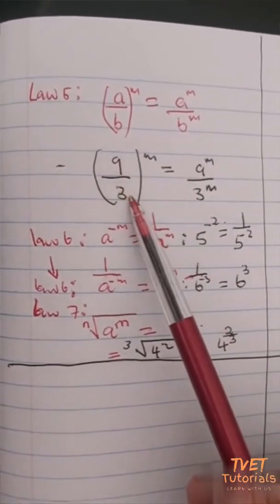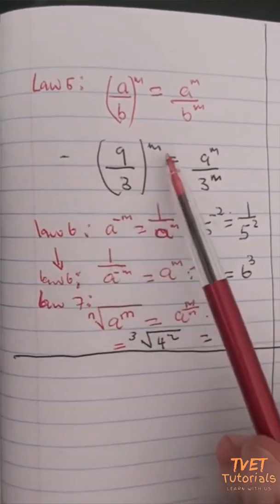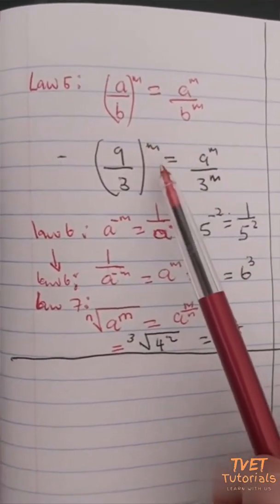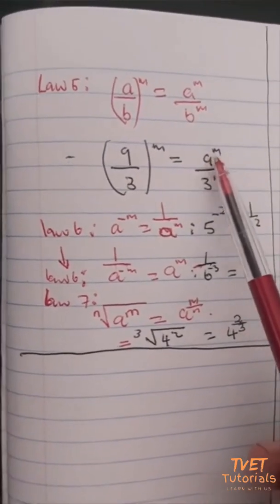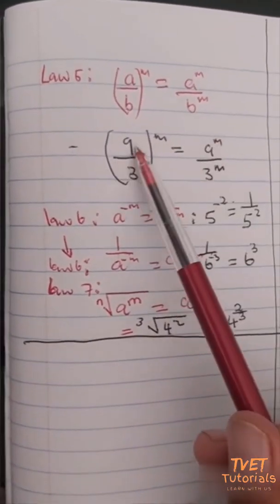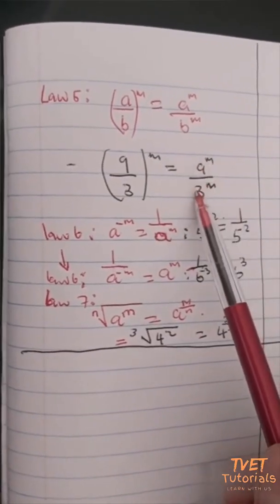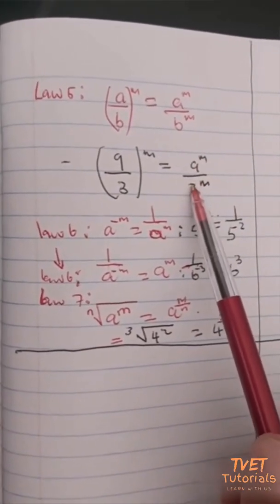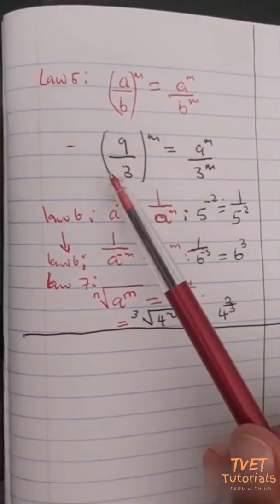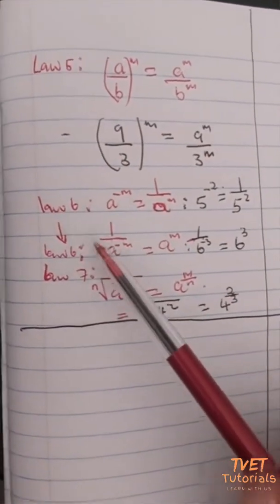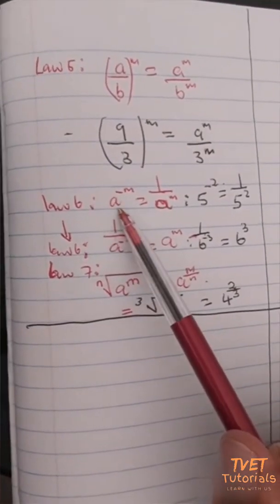As an example: nine divided by three, all raised to the power m, can be represented as nine to the power m — that's the numerator — divided by three to the power m, which is the denominator. So I raise everything to the power m.